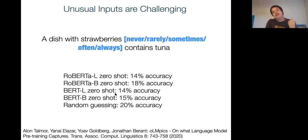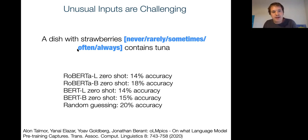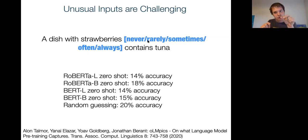A lot of work has also investigated exactly what kinds of knowledge language models capture, and what they fail to capture. One particular problem is when sentences probe for unusual common sense knowledge. For example, given 'a dish with strawberries, the [MASK] contains tuna,' and five options — never, rarely, sometimes, often, always — what we want is 'never,' since a dish with strawberries obviously doesn't contain tuna. This is probing for common sense knowledge using sentences that are unusual.